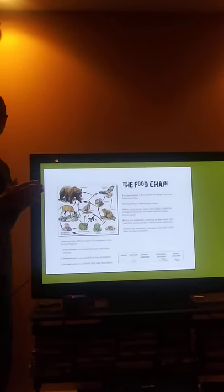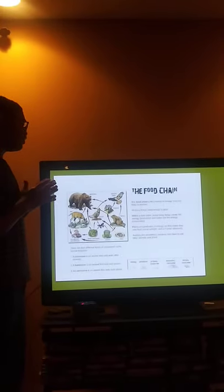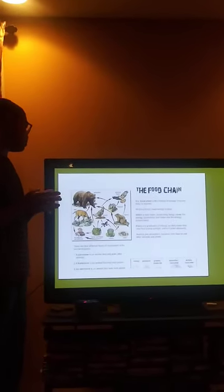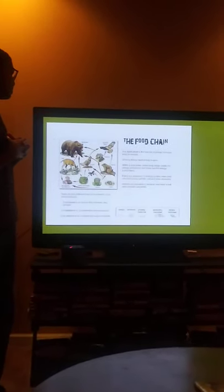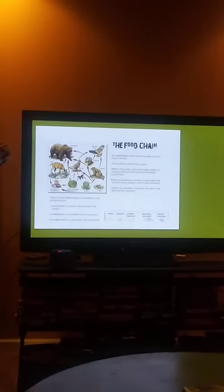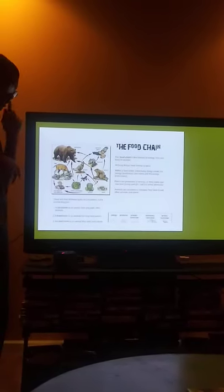Plants are producers of energy as they make their own food using sunlight, soil, and other elements like water. Animals are consumers because they have to eat other animals and plants to survive.